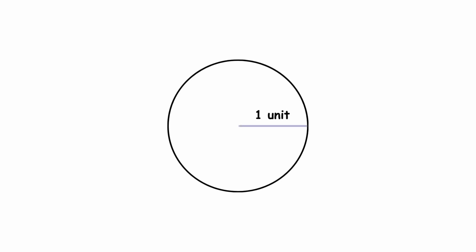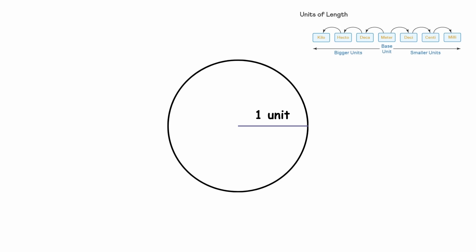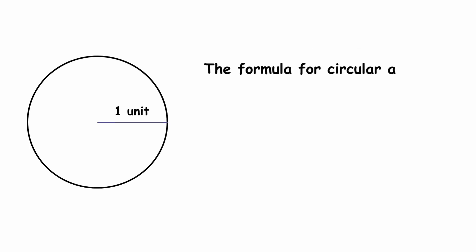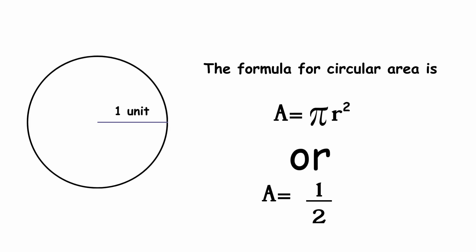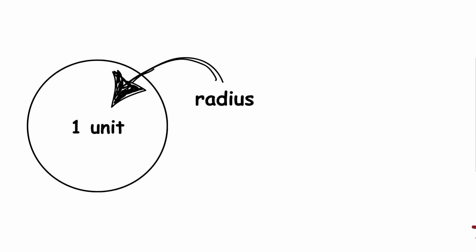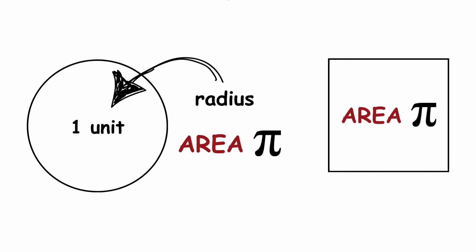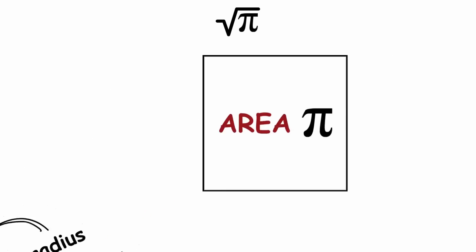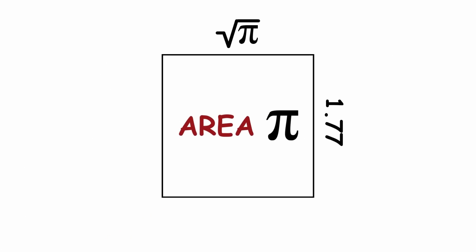To begin considering this problem, let's start by declaring that the radius of the circle is one unit, whatever that unit is. The formula for circular area is A equals pi r squared, or A equals one half tau r squared if you prefer. A radius of one gives us an area of pi. To square the circle, we need to draw a square with an area of pi, therefore having a side length of the square root of pi, about 1.77.